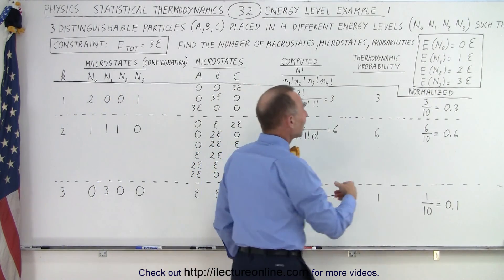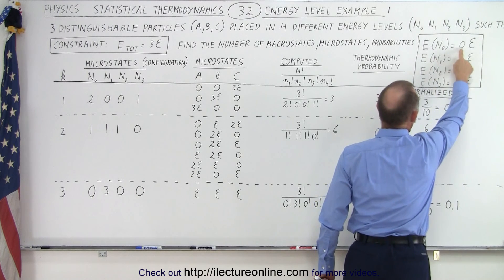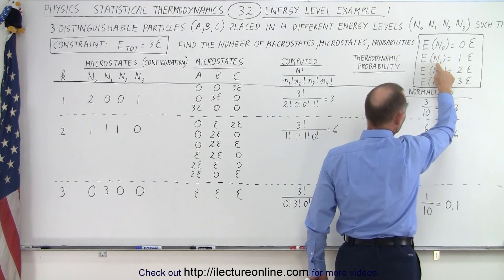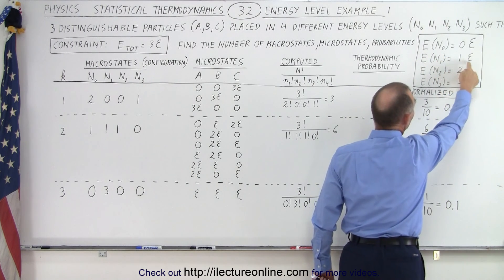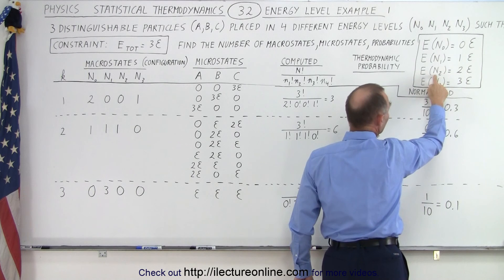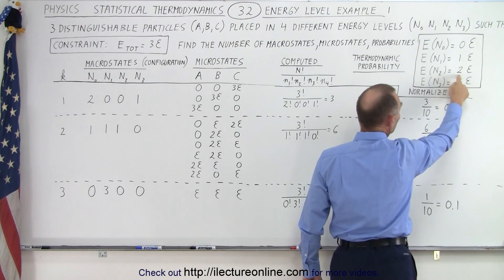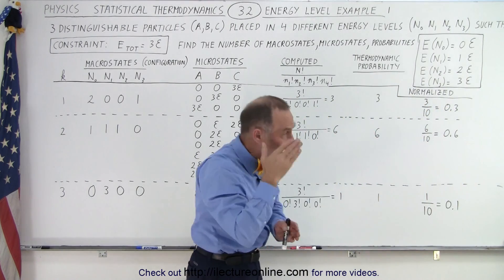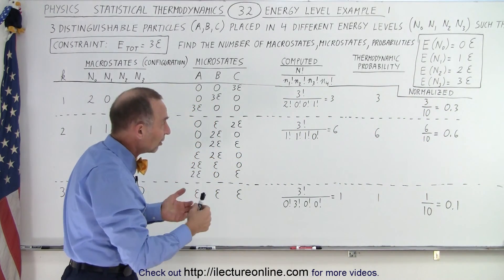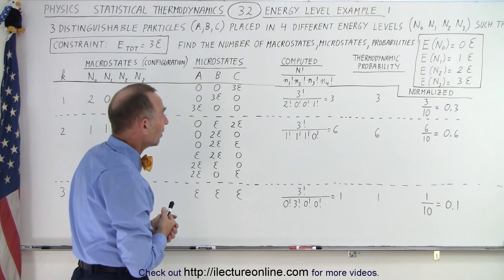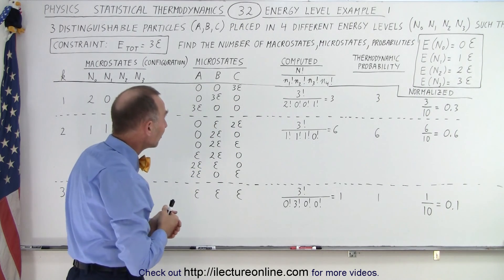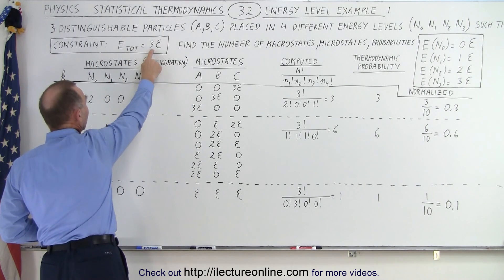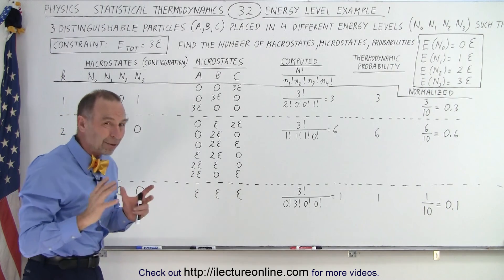So we can say that the energy level of N0 is zero quantum energies. The energy of N1 is equal to one quantum energy. The next energy level, N2, has an energy of two quantum levels, and N3 has an energy of three quantum levels. So we have four different energy levels that the particles or electrons can exist in, with each level defined, and the constraint that the total energy of all three particles together must be three quantum energies.